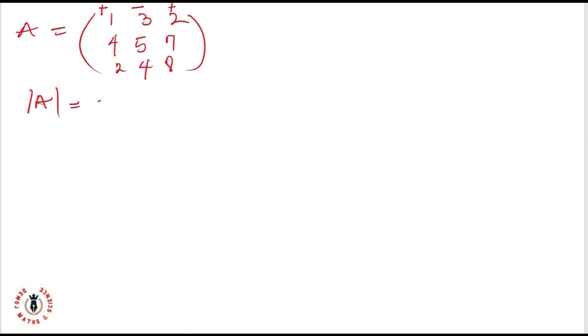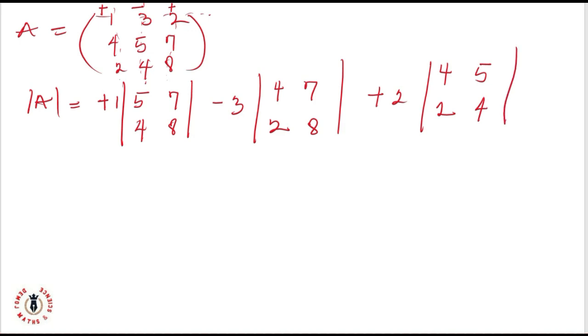I'll pick the line of the first one. That is matrix 1. That's plus 1. That will be the determinant of, here is a column, here is a row. What is out of that column is 5, 7, 4 and 8. Next element will be minus 3. Still in that same row, but this is the column. What is out of that column and that row is 4, 7, 2 and 8. Then, plus 2. I can pick the column still in that same row. What is out of that column will be 4, 5, 2 and 4.